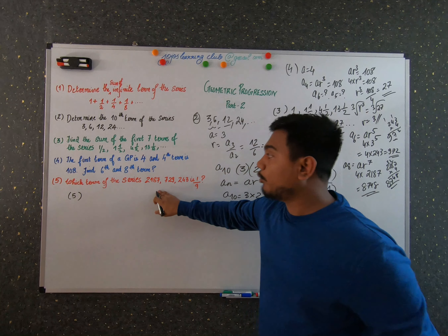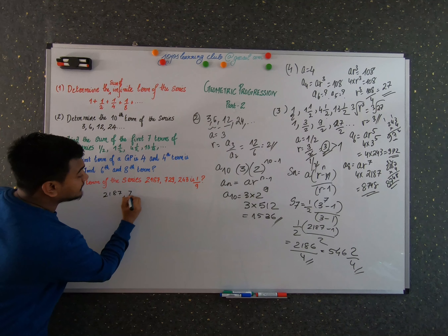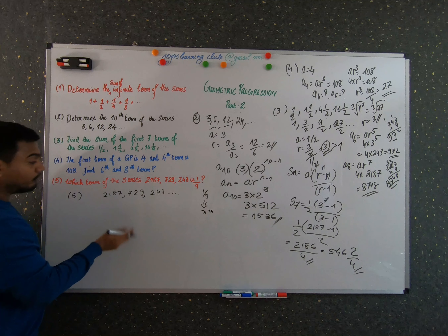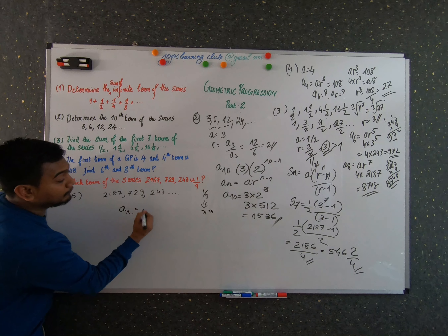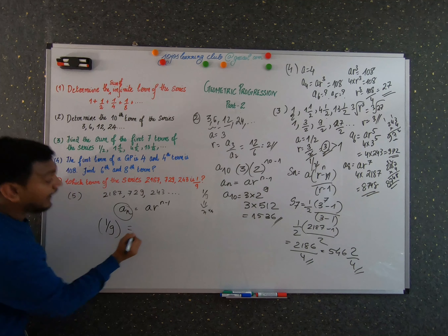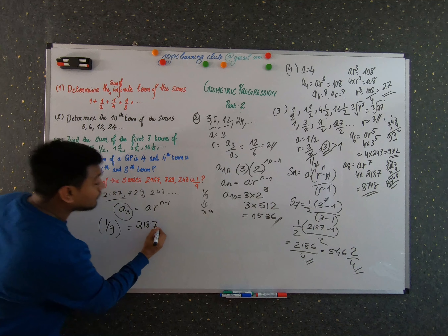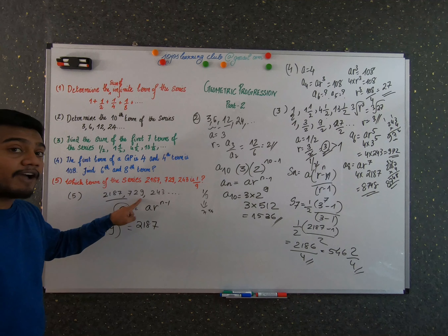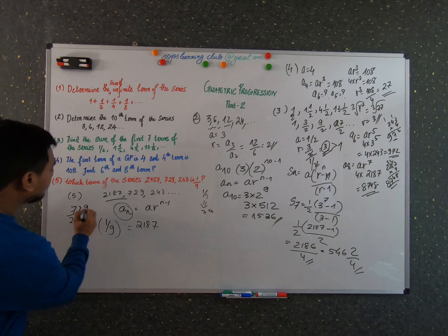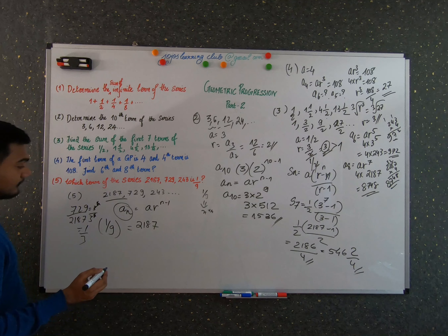The fifth problem: which term of the series 2187, 729, 243, ... is 1/9? We need to find n such that a_n = 1/9. Using a_n = a × r^(n−1), with a = 2187. The common ratio r = 729 / 2187 = 3^6 / 3^7 = 1/3.